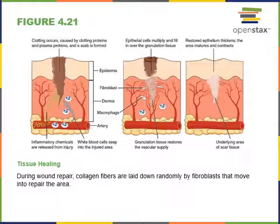Inflammatory chemicals stimulate vasodilation — widening of blood vessels — which leads to increased blood flow. The blood vessels also become leaky, allowing leukocytes and fluid to move from the blood into the interstitial extracellular space inside the tissue, specifically inside the connective tissue of the dermis.